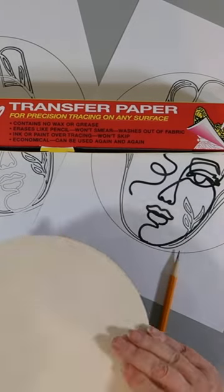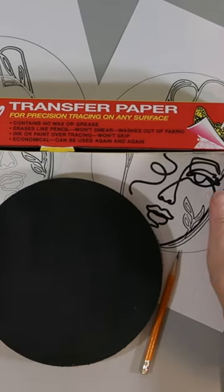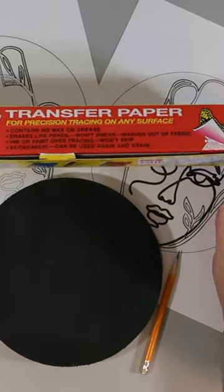Now that the paint is dry on our wood round, we're ready to trace. For that I'm using this wax-free Saral.